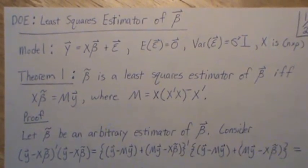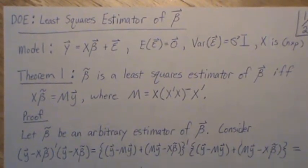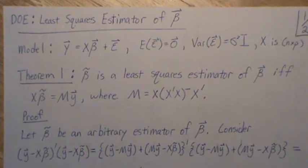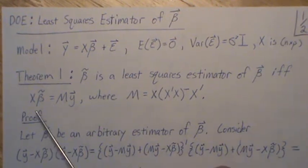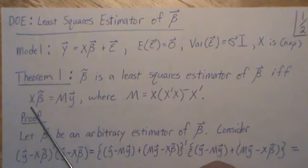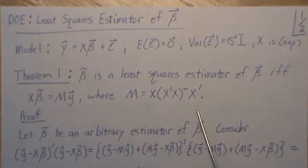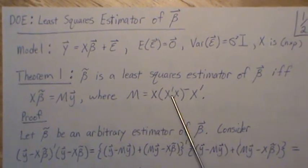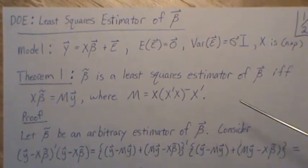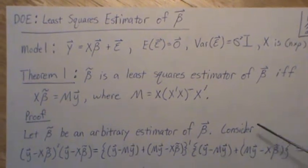Now theorem one, beta tilde is the least squares estimator of beta, if and only if this relationship holds x beta tilde is equal to m times y, where m is x times x transpose x generalized inverse times x transpose. And that's from the previous videos, it's the perpendicular projection matrix onto the column space of x.